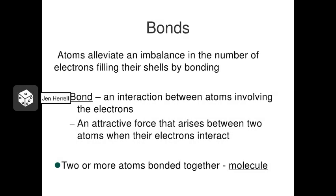Let's define what a bond is. A bond is an interaction between two atoms. Typically this involves the electrons in some way, and the atoms don't actually have to be hooked together — they can just be strongly attracted to one another. Whenever two atoms make a bond, they make something called a molecule.